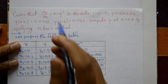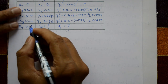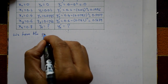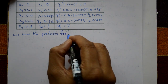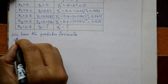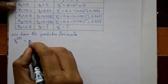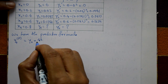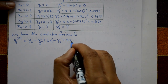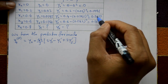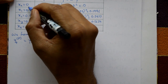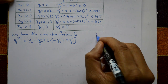Now applying Milne's method, the first step is the predictor formula. The predictor formula is: y4(P) = y0 + (4h/3) × (2y1' - y2' + 2y3'). We know y1', y2', y3' values to substitute. The h value is the equidistant step size: the difference is 0.2, so h = 0.2.